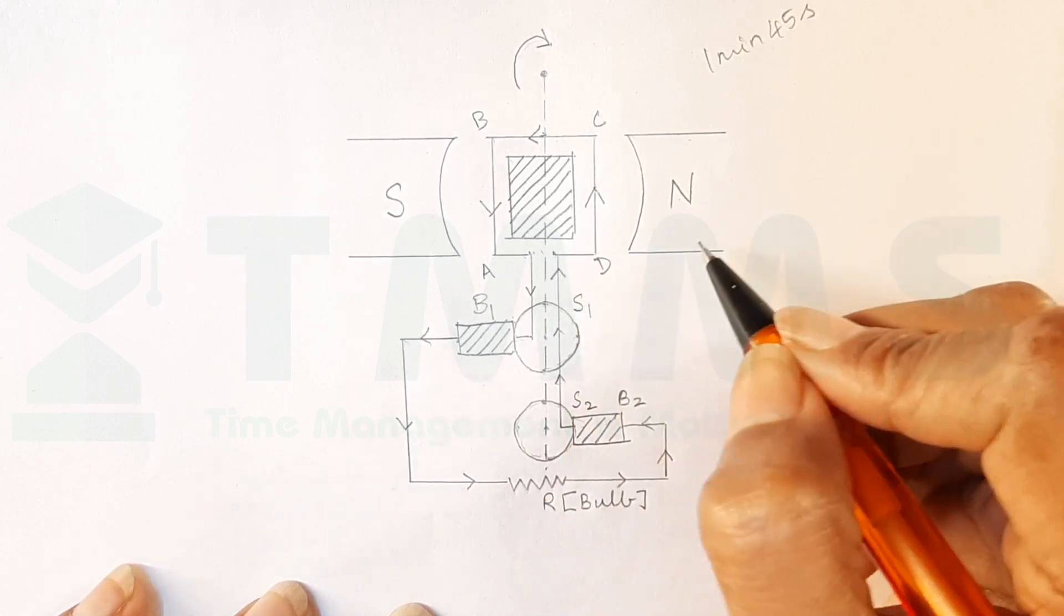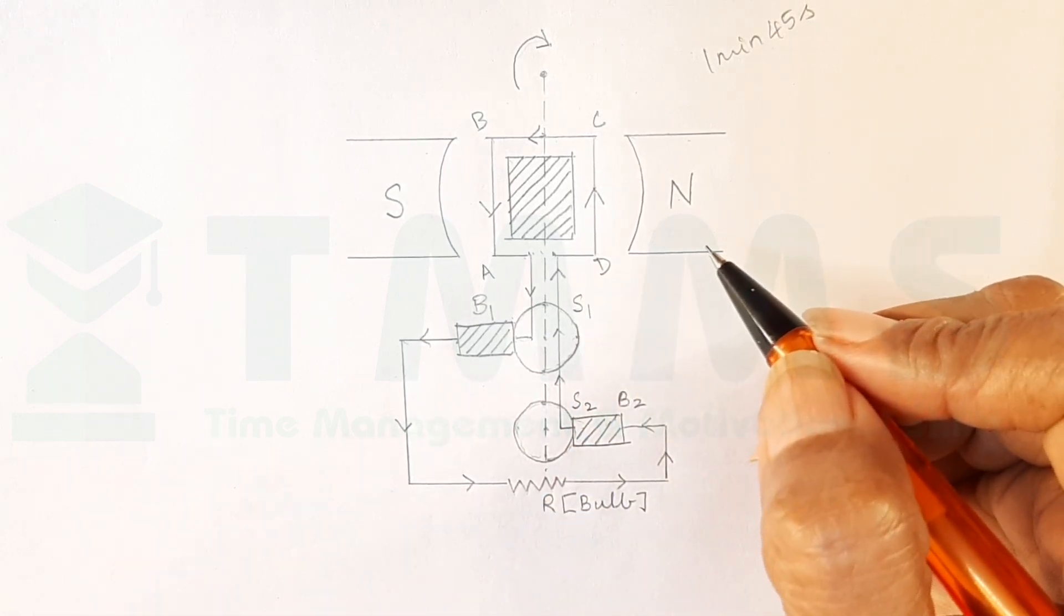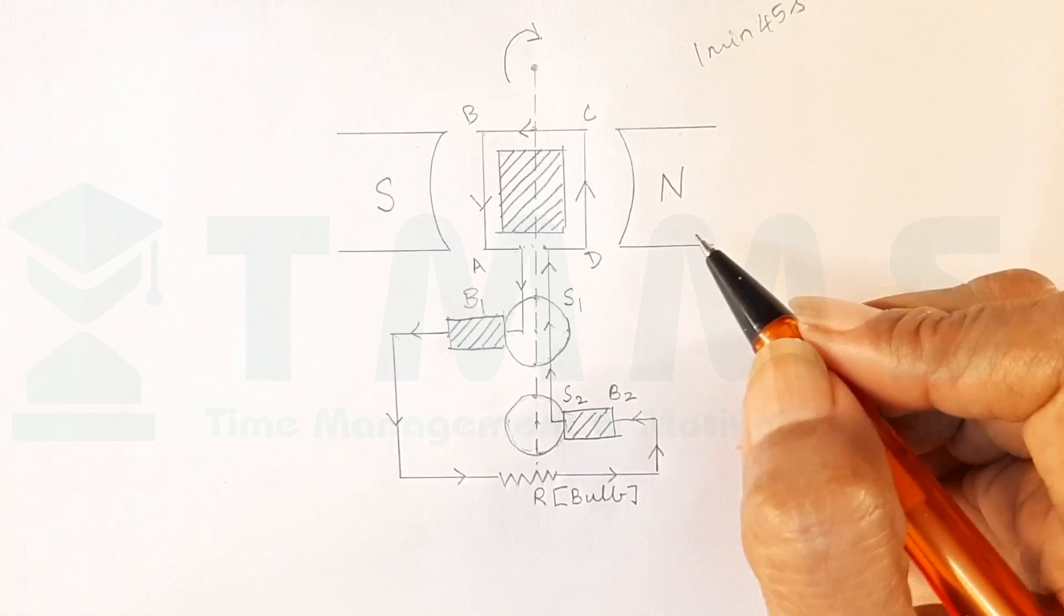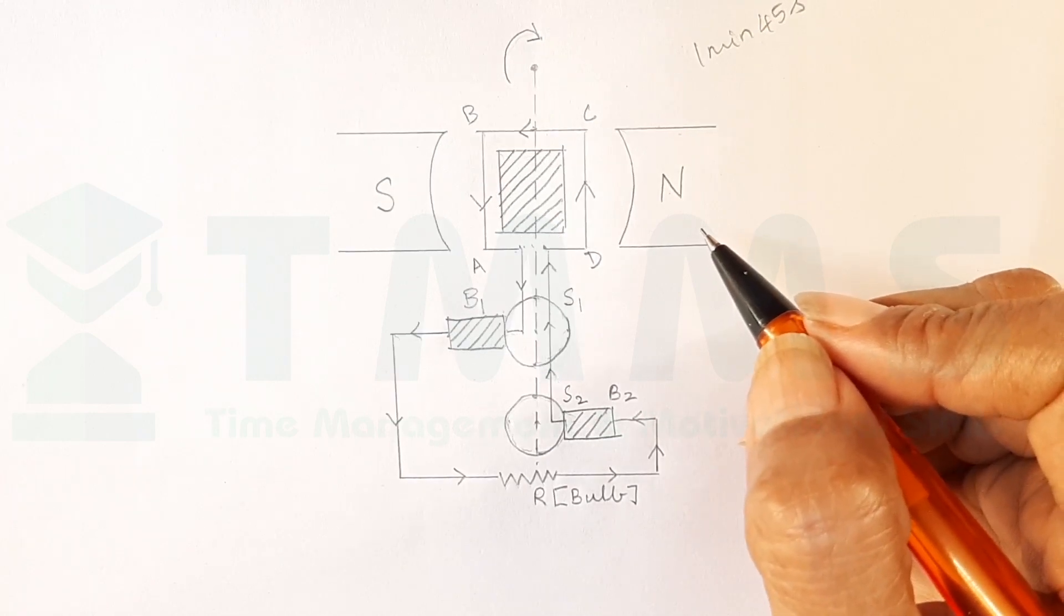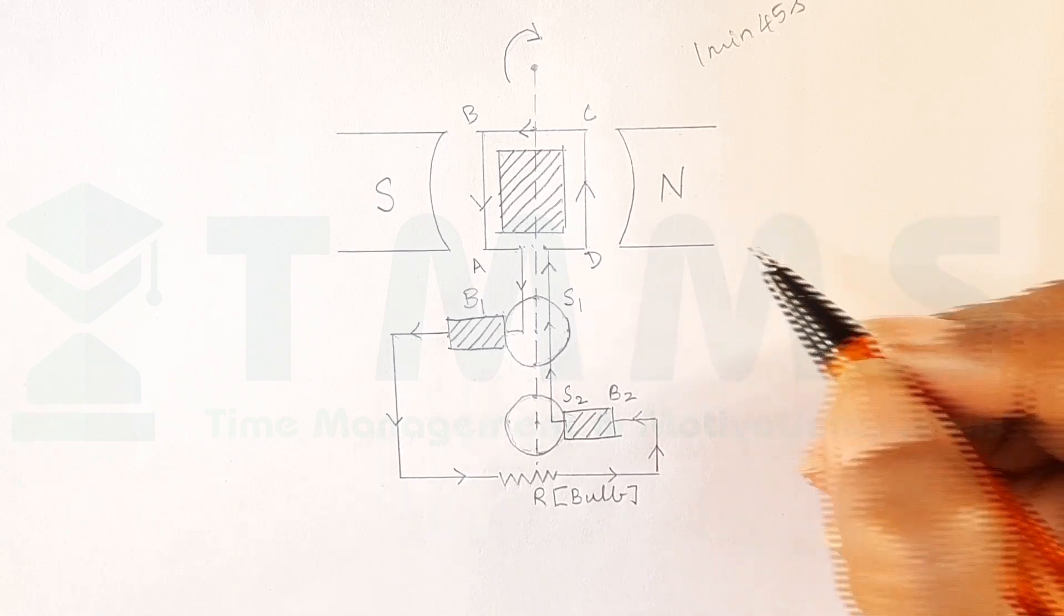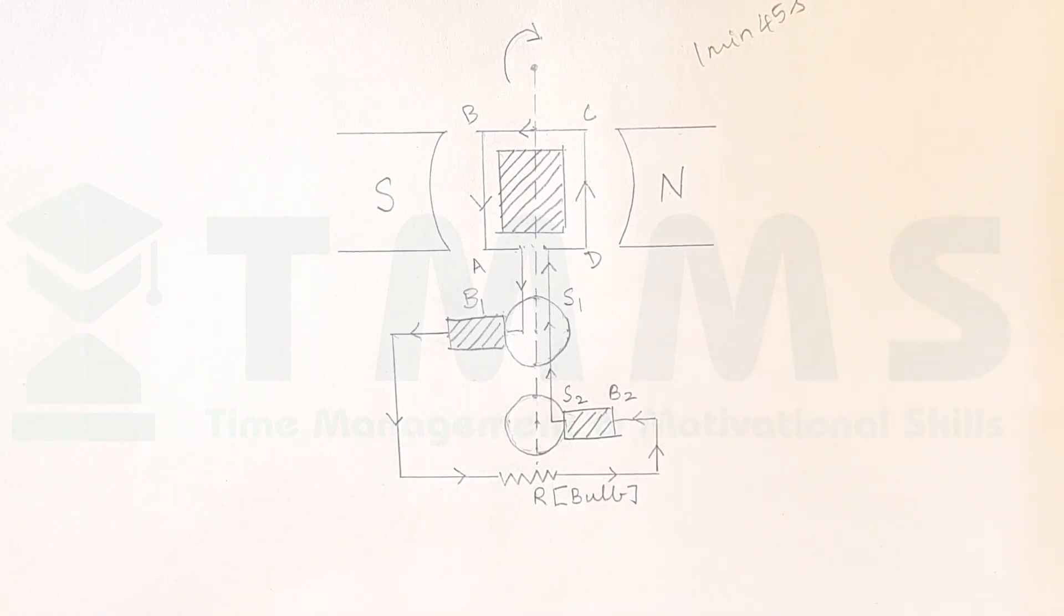So, you see that you can really draw this diagram fast. All we have to do is to label now. And so, what you are going to do is you are going to draw this diagram of this AC generator. And you can get full marks. Practice it nicely and tell me how long did you take to draw this diagram. Let us look at the labels now.